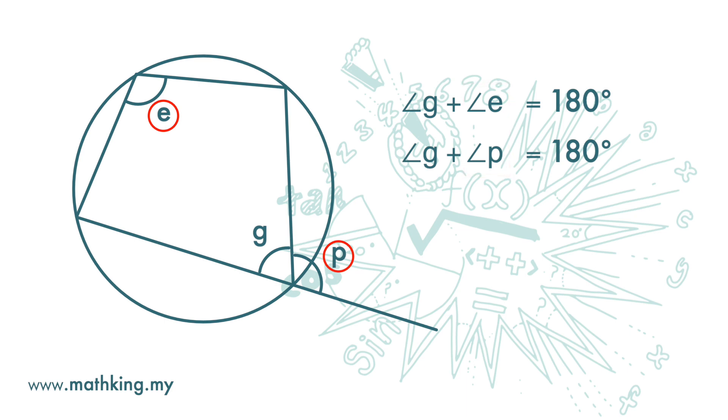This is how we remember this point. First, we note the exterior angle. Then, we find the interior angle next to the exterior angle. Then, we find the interior angle that is opposite the interior angle in step 2. And these two angles are equal.